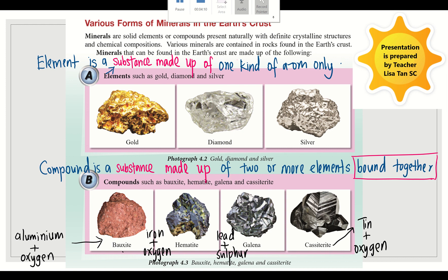One, minerals are solid. Minerals have definite or fixed crystal structure. Number three, mineral found naturally. Number four, mineral can exist in the form of elements or compound.